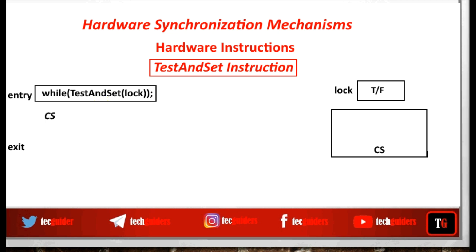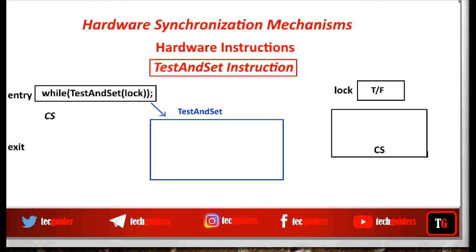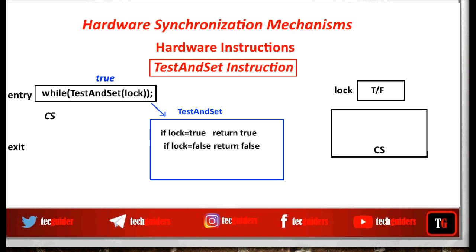What should this function do? If the lock value is true, then this function should return a true value, so this becomes while(true) — the process will keep on waiting in the while loop without entering the critical section. And if the lock value is false, then the function should return false, so this becomes while(false) — the process will exit the while loop and can enter the critical section. Thus, if lock equals true, the function returns true; if lock equals false, the function returns false.